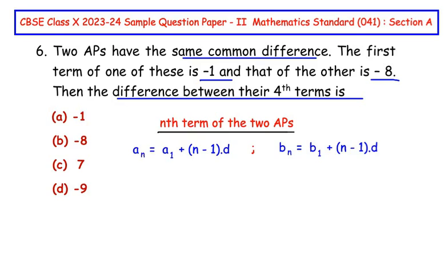Now we have to find out the difference between the fourth terms. So for the fourth term we are going to take n is equal to 4 and substitute the values of a_1 and b_1. a_4, in place of n we will write 4, is equal to a_1, the first term I am going to take as negative 1, plus since n is 4, so 4 minus 1 is 3, so 3 times d. So we got the fourth term of the first AP.